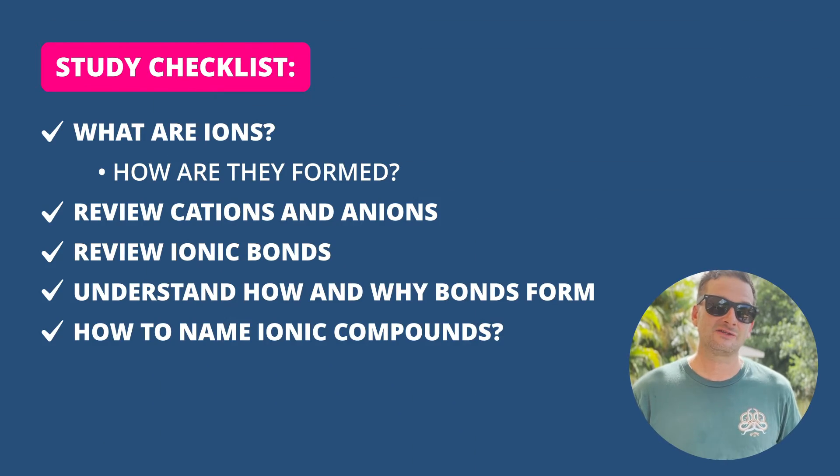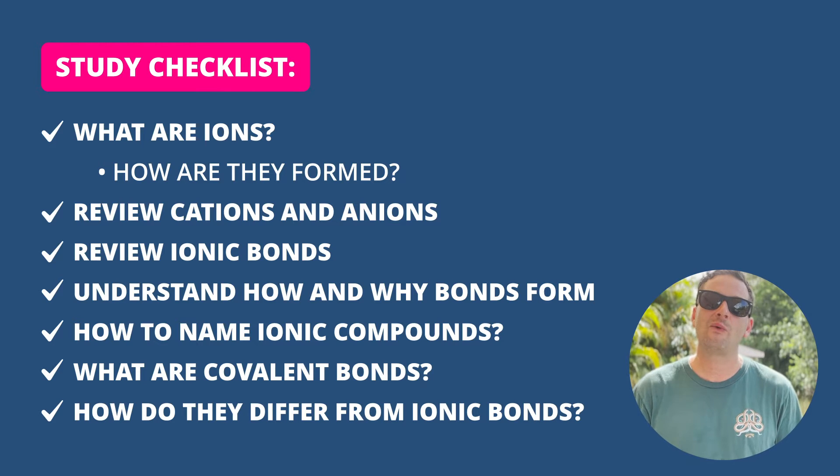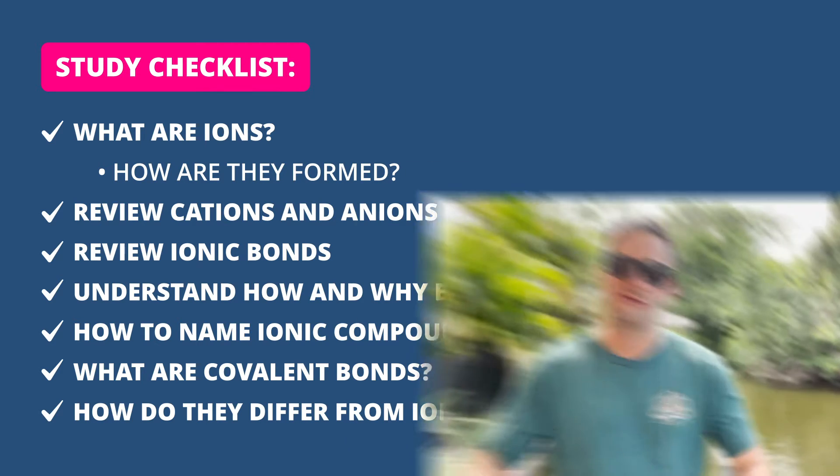Now we get into chemical bonds. The most fundamental thing to know is what ions are. Chemical bonds are the attractive forces that hold atoms together in compounds. They form through the sharing of electrons in covalent bonds or the transferring of electrons in ionic bonds. You'll want to review cations and anions, understand how and why bonds form, and know the difference between covalent and ionic bonds. Understanding these things will really help you understand the periodic table better, since it organizes elements in a way that highlights their ability to form chemical bonds.